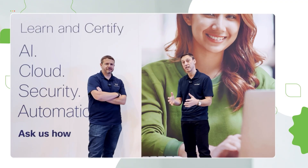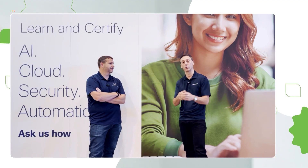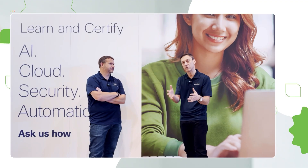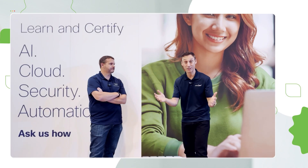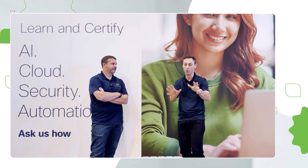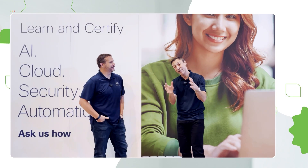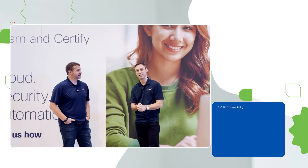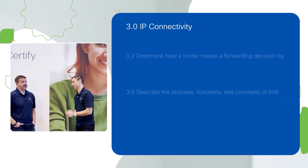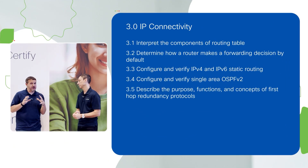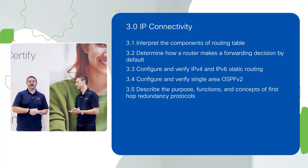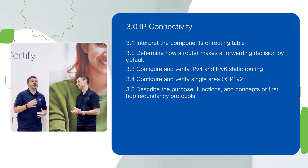It's 25 percent of the exam. If you got 100 questions on the CCNA exam — which you won't, but using that round number — 25 percent of those questions will come from Domain 3, all about IP connectivity. Another way to look at it: one out of every four questions is going to come from this domain, so it's really a critical one to be super comfortable with.